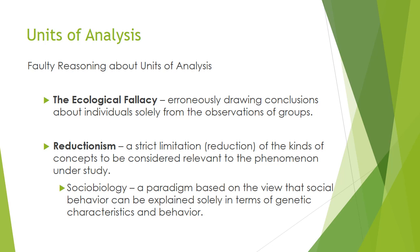We've got two main errors to avoid: the ecological fallacy and reductionism. Both of these are very bad, and you've probably done it innocently in the past. Things like stereotypes cause these fallacies, and things like racism, bigotry, and prejudices can lead us to fall into one of these categories. Ecological fallacy is erroneously drawing conclusions about individuals solely from the observation of groups.